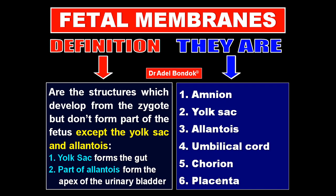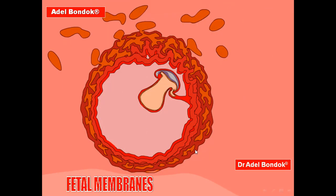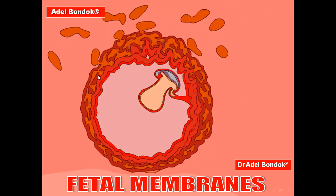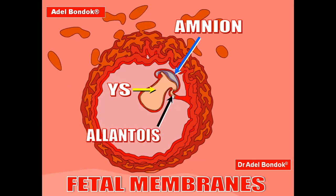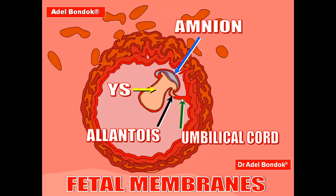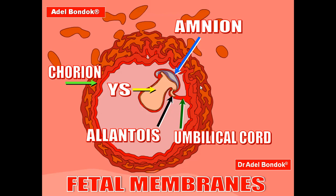Starting with the amnion — here is a photo of the fetal membranes. This is the amniotic cavity, and this is the amniotic membrane. This is the allantois diverticulum. This is the connecting stalk, or the future umbilical cord. These three layers are the chorion, and this is the placenta.